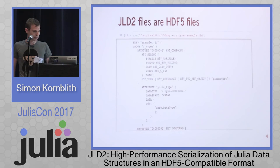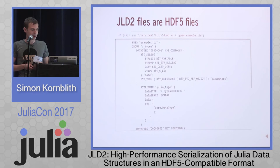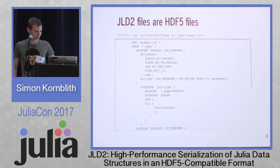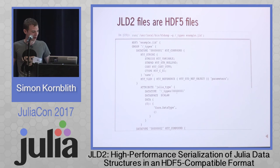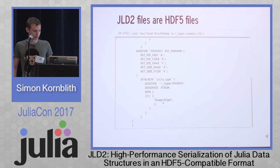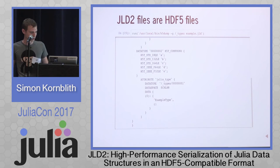Looking at what's in the types group, things are a bit more complicated. DataType1 is an HDF5 data type that represents a Julia data type — a Julia data type has a name, which is a variable-length string, and some set of parameters. It also has an attribute called Julia type, whose data type is the HDF5 representation of a data type — like the type of a data type. In Julia, the type of DataType is DataType, called Core.DataType with no parameters. The second data type saved in the file is the representation of ExampleType, with fields A, B, C, D, E and their associated field types — for example, Int8. It also has a Julia type attribute associating it with the type saved in Julia, called ExampleType with no parameters.